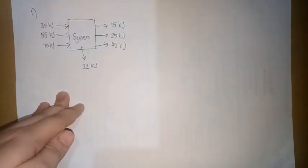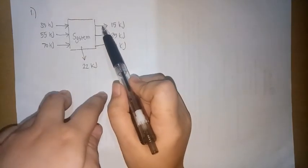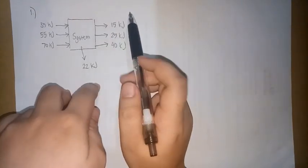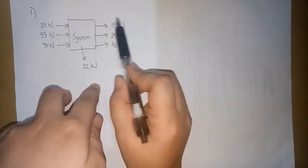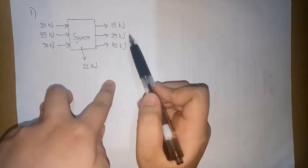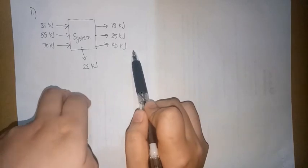Of the four energy quantities leaving the system, these three are known. So meron tayong four energies leaving the system. And sa four na yun, itong tatlo yung known: 15 kilojoules, 25 kilojoules, and 40 kilojoules.